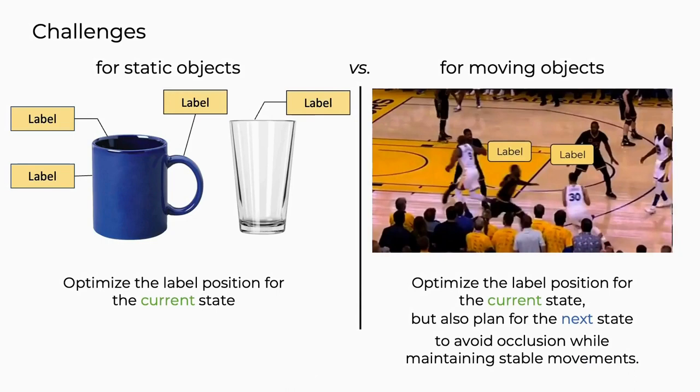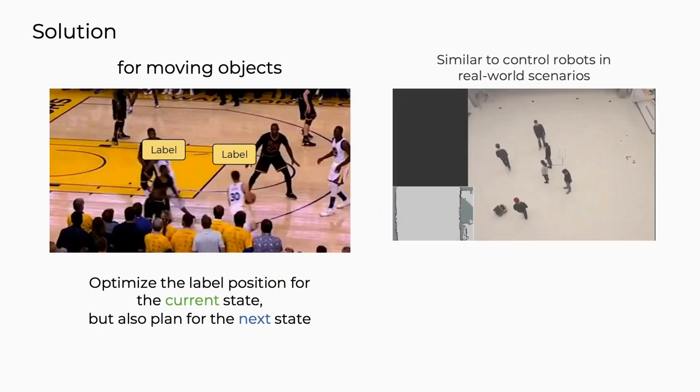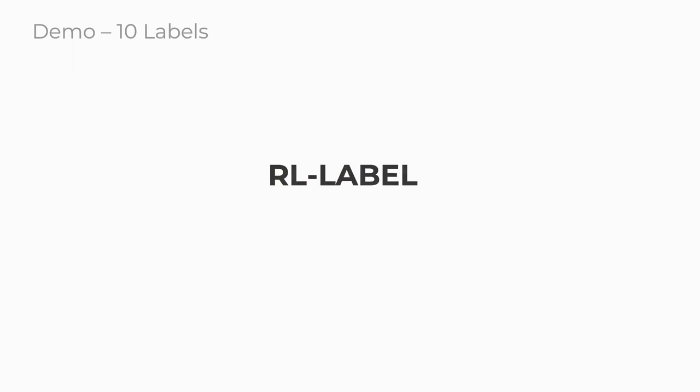How can we develop a system to manage the placement of AR labels for moving objects? We view this question as being similar to controlling robots in real-world environments. Building on this idea, we have developed an RL-based label placement system.